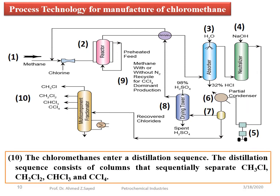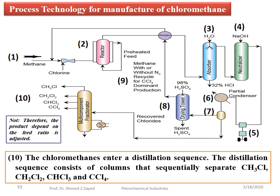Step 10: The chloromethanes enter a distillation sequence. The distillation sequence consists of columns that sequentially separate methylene dichloride, chloroform, and carbon tetrachloride. Therefore, the product distribution depends on the feed ratio, which is adjusted accordingly.